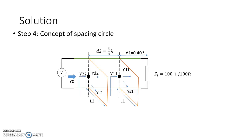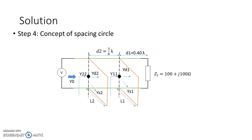Going back to the circuit diagram: we have plotted ZL and converted it to YL. From YL, if we move 0.40λ on the transmission line, we reach Y11. Then after another 3/8λ, we reach the point where Y22 lies. Y22 must be such that after it, we have reached the center of the Smith chart — meaning we are in a matched condition.